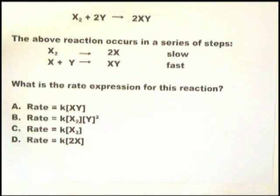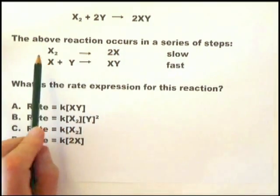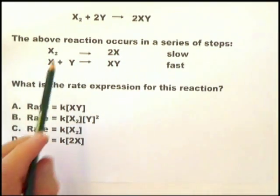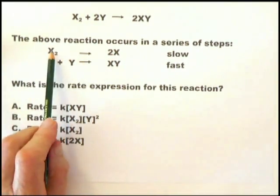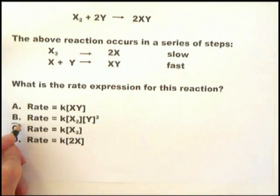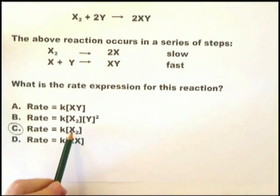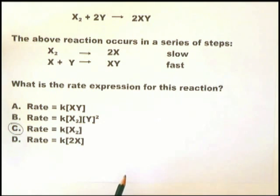What is the rate expression for this reaction? You're looking at the slowest step, which is X2 goes to 2X. So which one of these rates fits in with X2 goes to 2X? And clearly it's C. It's the rate is equal to K times the concentration of X2. All the others are clearly irrelevant.